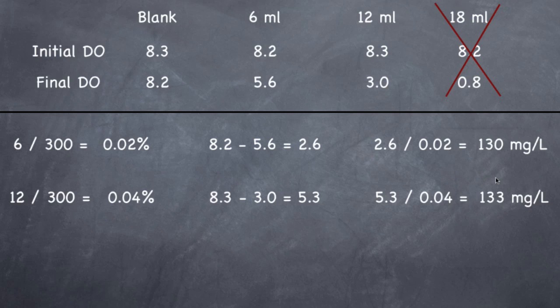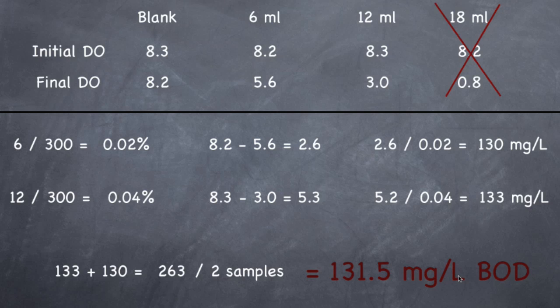Now the reported value is the average of these two samples. So we're going to go ahead and add 133 plus 130, which equals 263, and then divide by the number of samples. I've got two samples that I did, so I'm going to divide 263 by 2. And your DO to report to the state would be 131.5 milligrams per liter of BOD. And that's all there is to a BOD test.